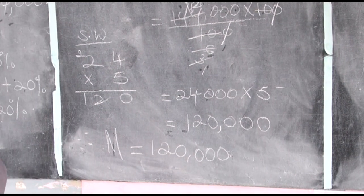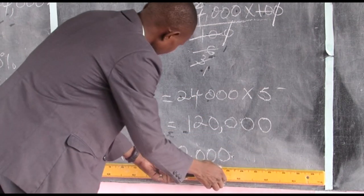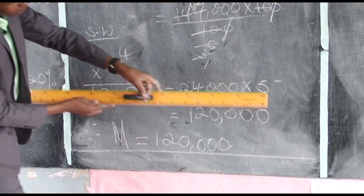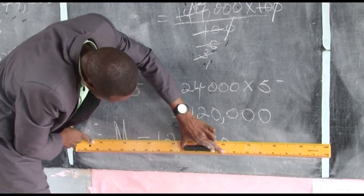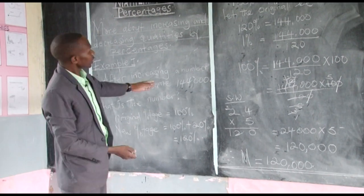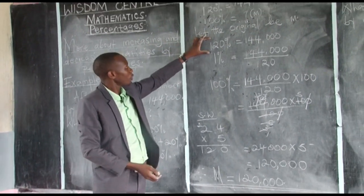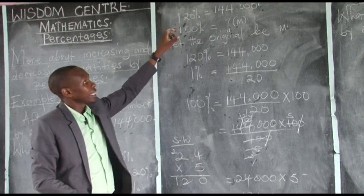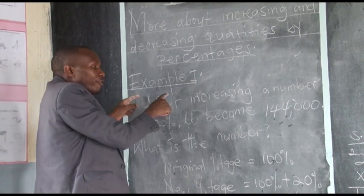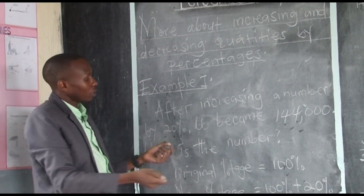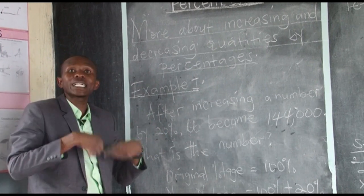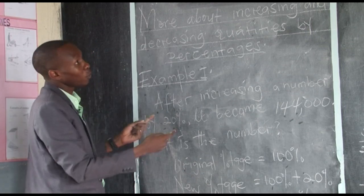These are the steps we shall always follow: know that the original percentage is ever 100%, and the new percentage is 120. Don't get confused between 'increase a number' and 'after increasing a number.' Once you say 'after increasing,' it means it is already done — the number given is now the new number. That's why we worked it out this way.